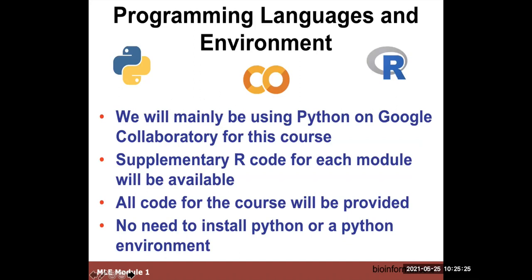We've chosen Python in part because historically a lot of freeware and collaborative software for machine learning was written in Python. But we also have R code, and we know a large number of people in bioinformatics use R and are comfortable in it. So this course is bilingual, if you want. We will be mostly working on Python, and if you want to go to R, the code is there and you can compare one-on-one. By using the Colab environment, you don't have to install Python or R — you're using it through Colab.